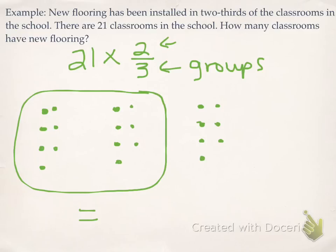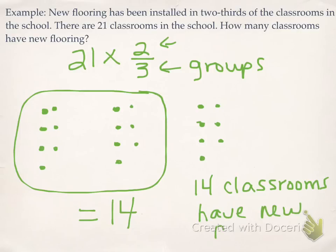So if I count them up, I have 1, 2, 3, 4, 5, 6, 7, 8, 9, 10, 11, 12, 13, 14. So how many classrooms have new flooring? 14 classrooms have new flooring. And because it's a word problem, you need a word sentence. Have new flooring. So that would be the counter model.